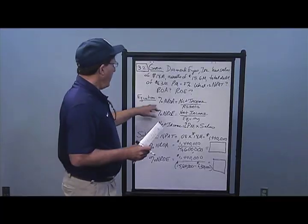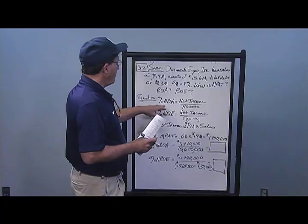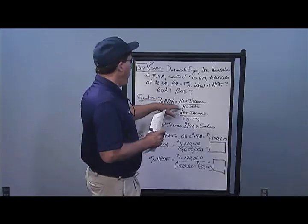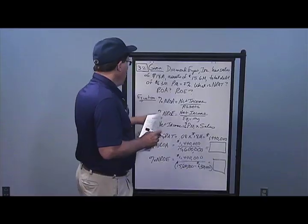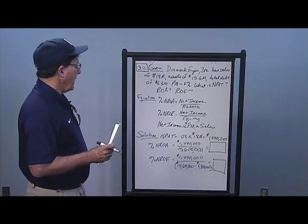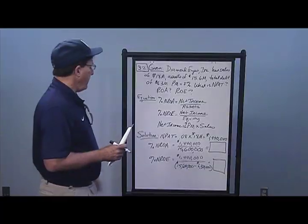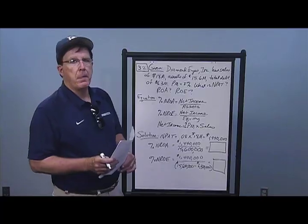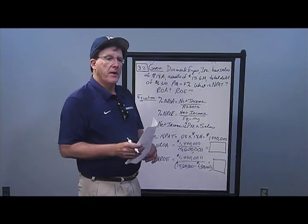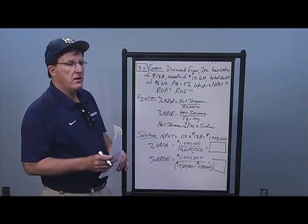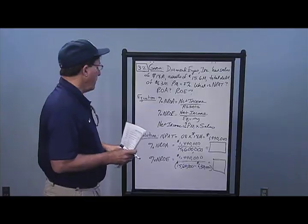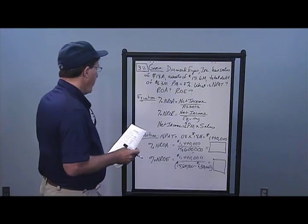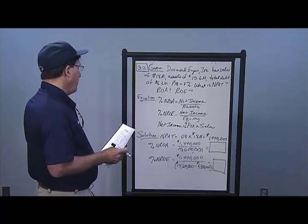To get return on assets, I take net income divided by assets. To get return on equity, I take net income over equity. First, I must calculate net income by taking profit margin percent — also known as net return on sales — times sales, and that gives me my net income number.